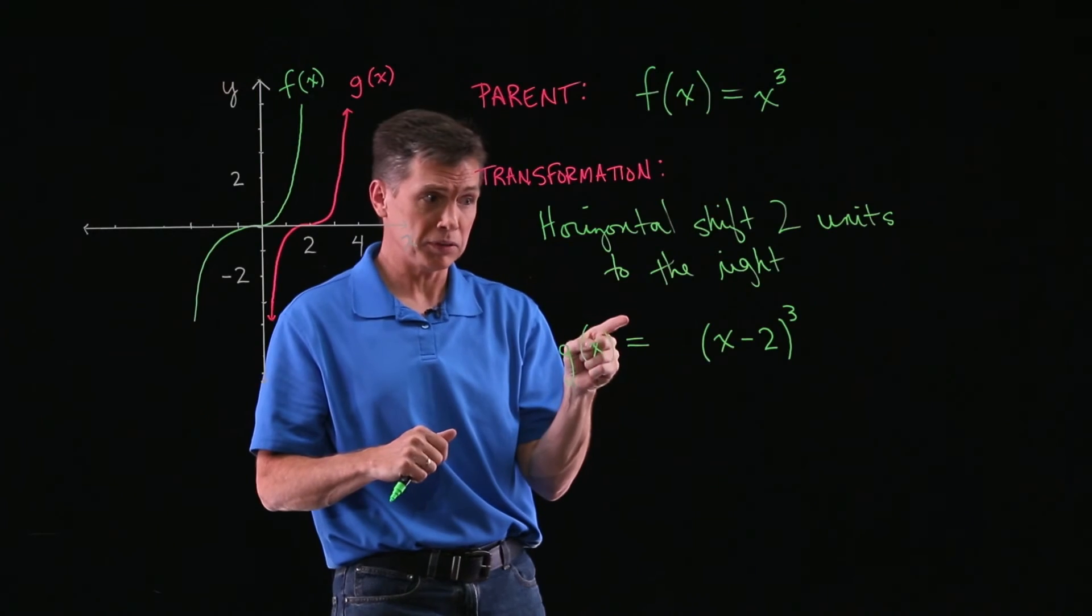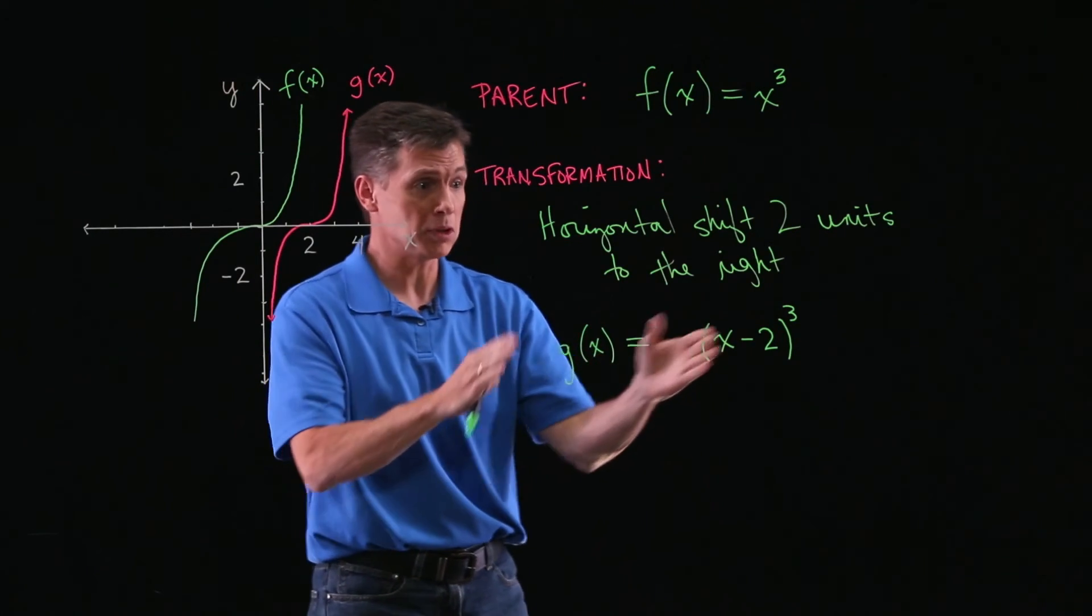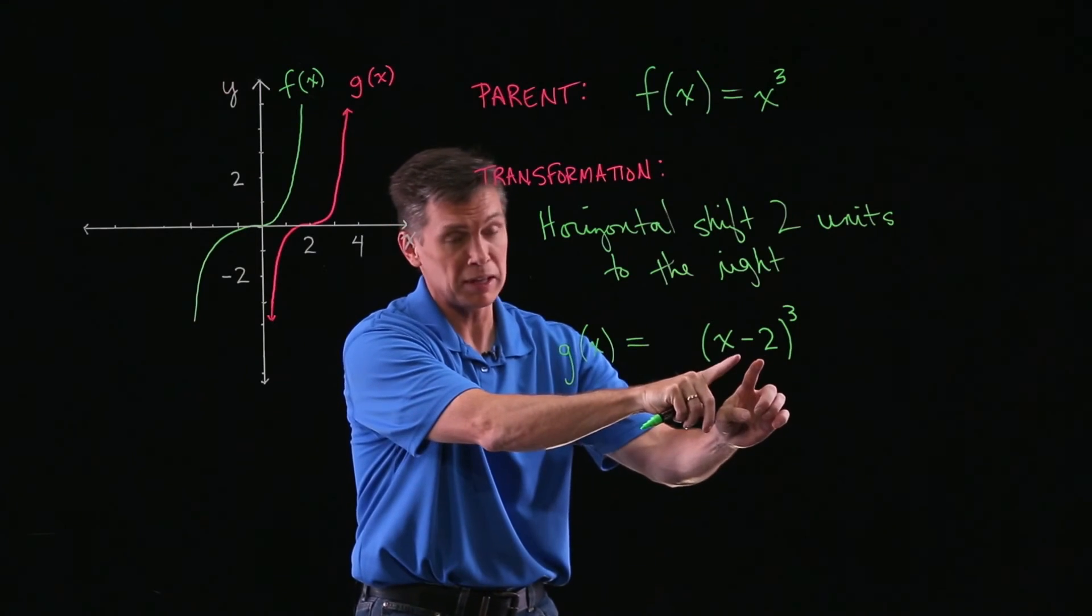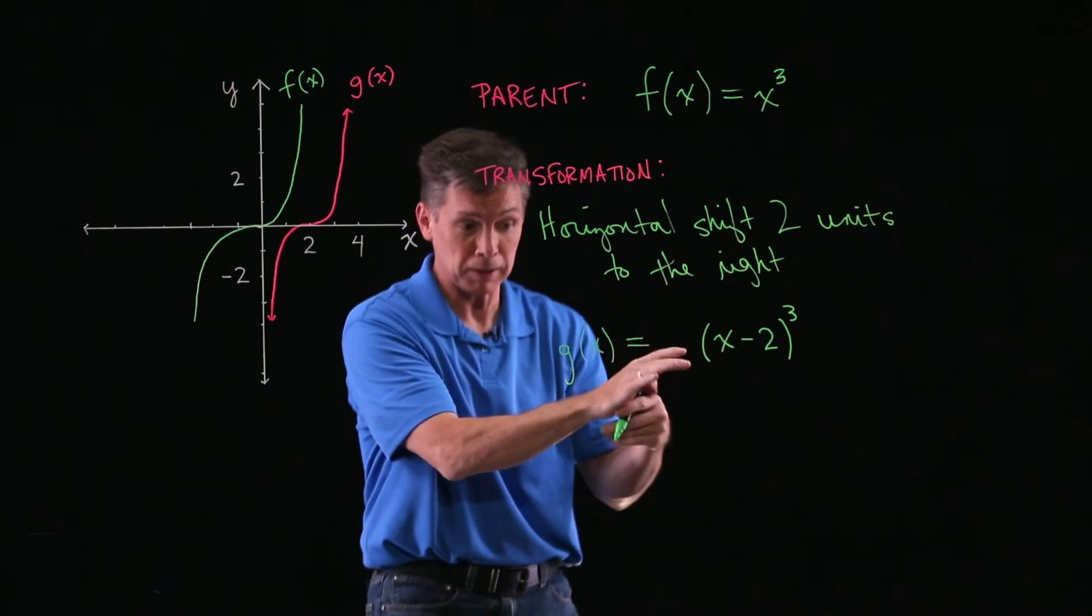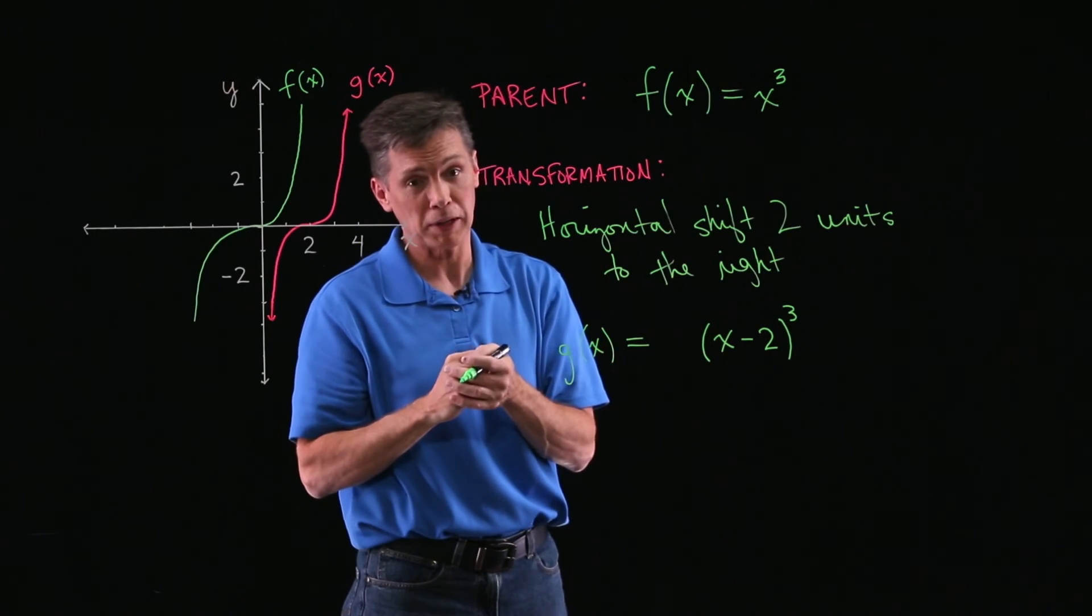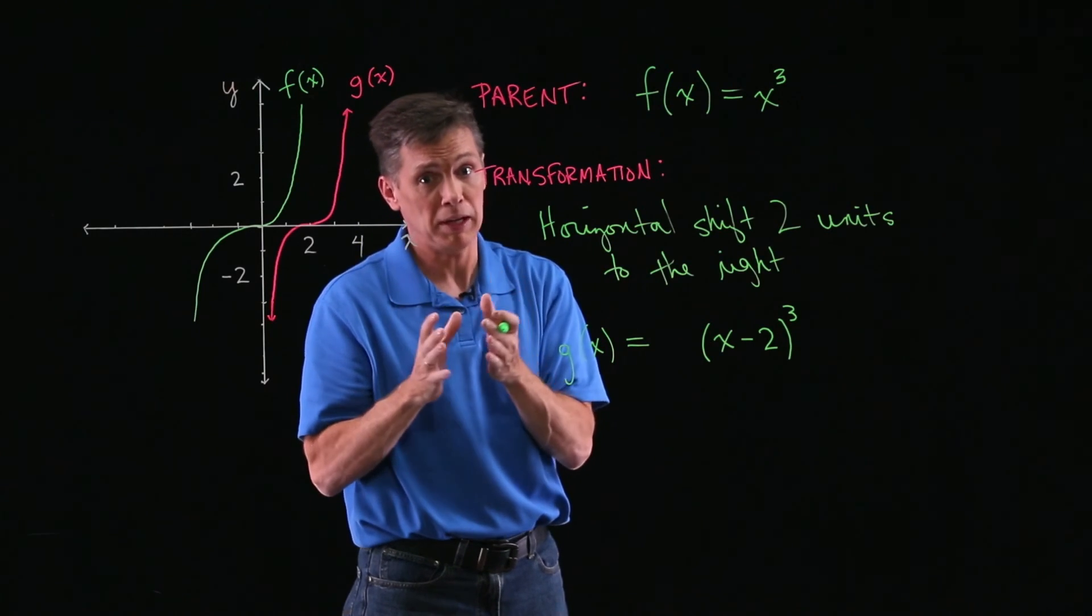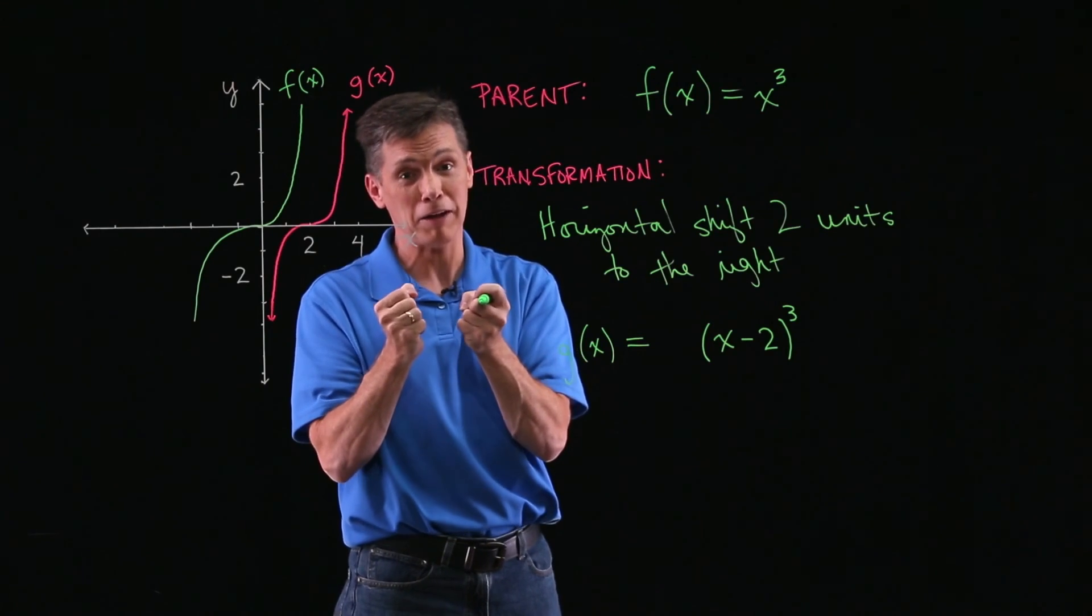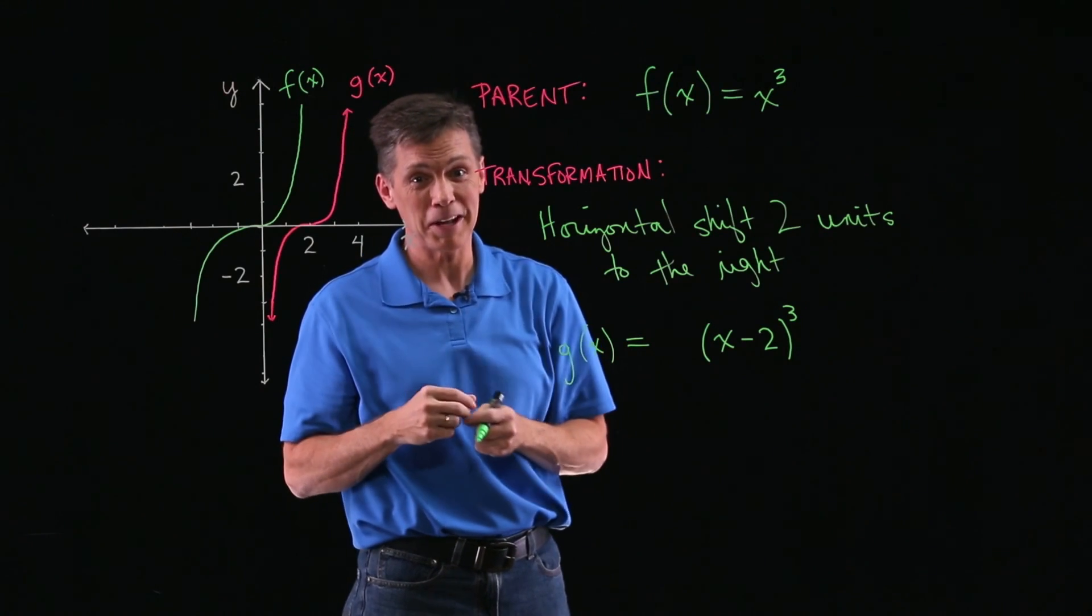OK? But that's it for me in this particular problem. The only transformation was that shift to the right, two units. I've represented that with my minus 2 inside. And so this would be my equation for g of x in this problem, OK? These problems might take quite a bit of thinking. But I'll stress again, it's such a good skill to have. So try to get it down now, all right?